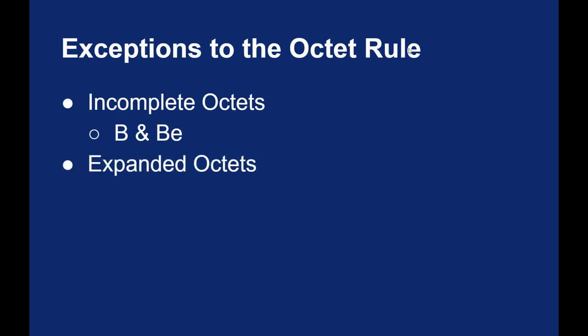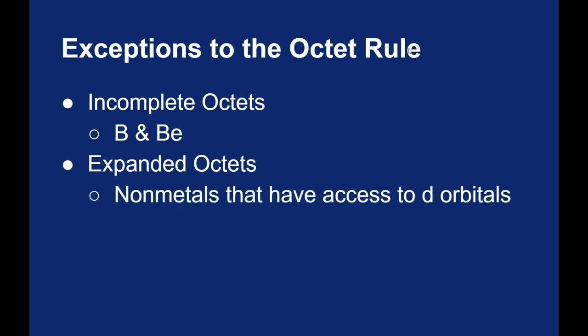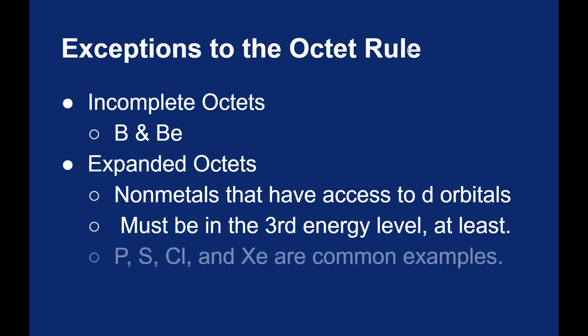More interesting to me though are those elements that can expand their octet. Now remember the importance of eight electrons comes from the fact that your s and p orbitals are filled. So to expand an octet, to go beyond eight electrons around an atom, you need to have d orbitals present. You need to go beyond the s and the p. The d orbitals don't start to exist until the third energy level. So in order to expand the octet, we need to talk about non-metals that are in the third energy level or higher.